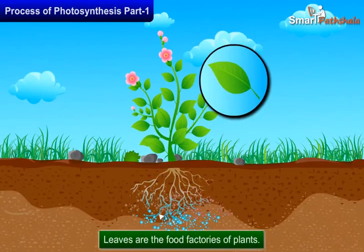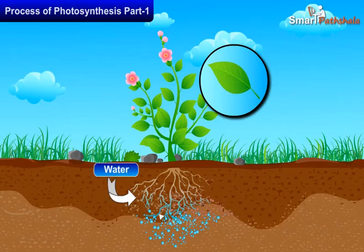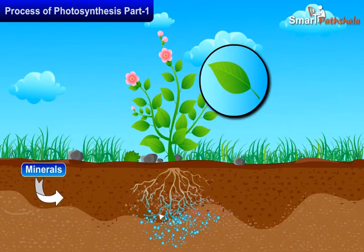Leaves are the food factories of plants and the synthesis of food in plants occurs in leaves. All the raw materials like water and minerals present in the soil are absorbed by the roots and transported to the leaves by the vessels which run like pipes throughout the root, the stem, the branches and the leaves.